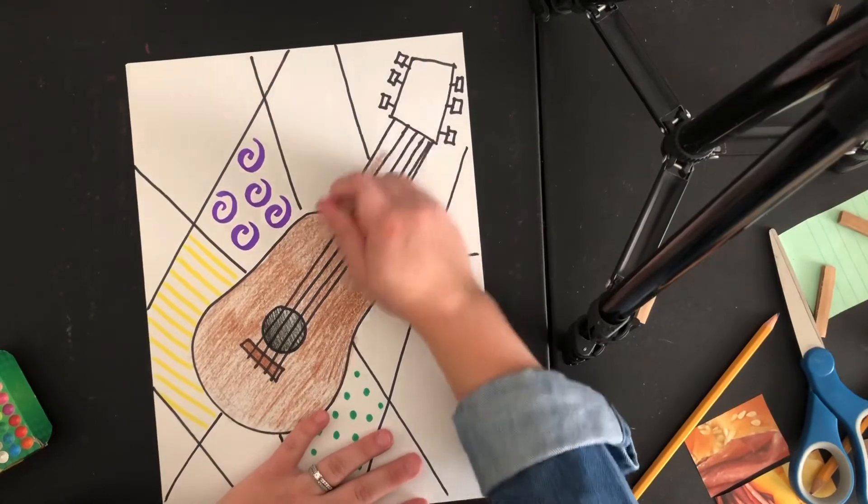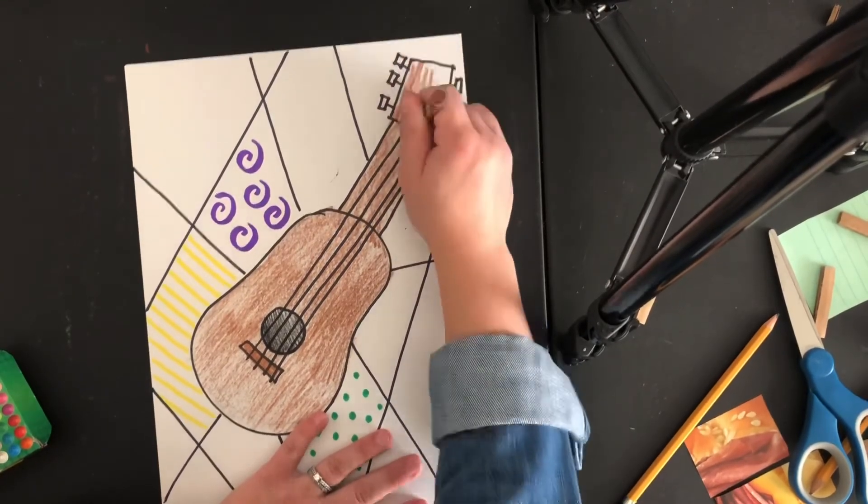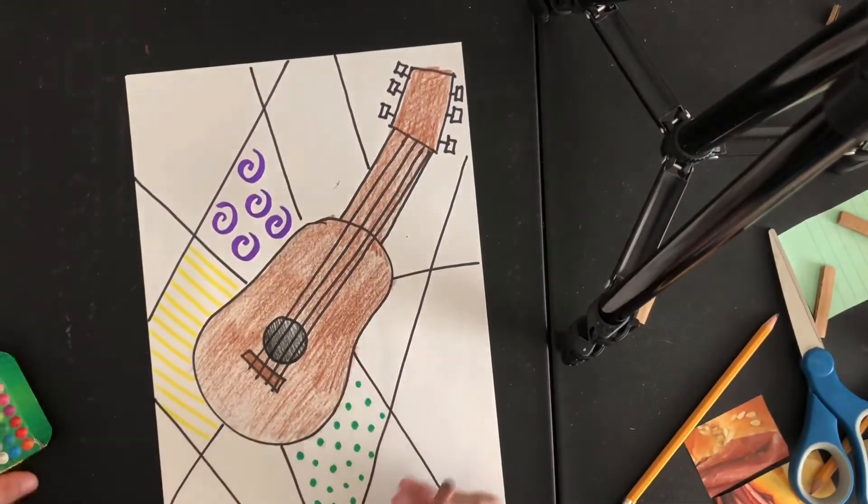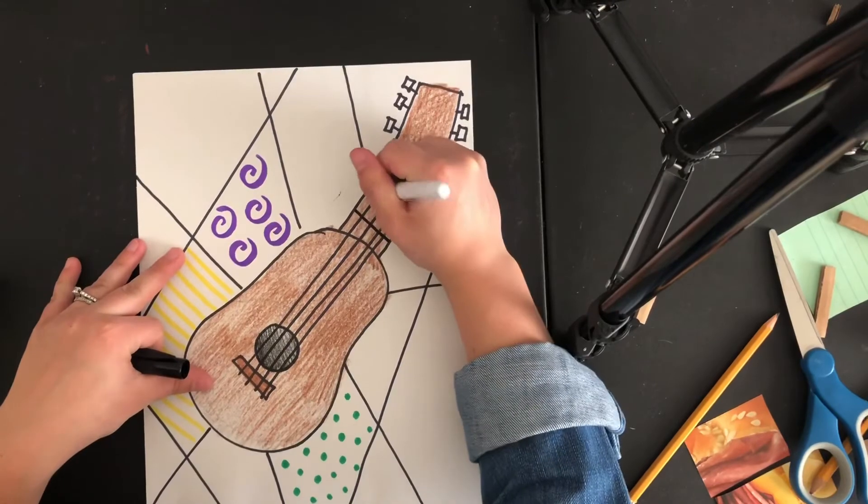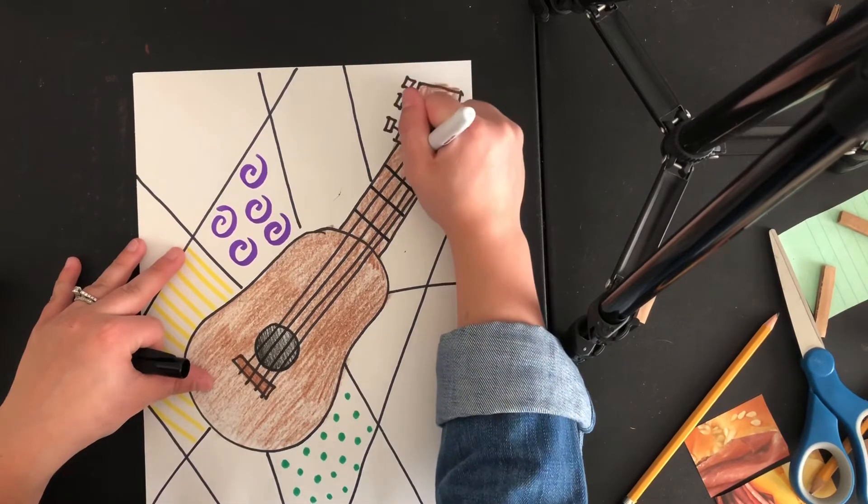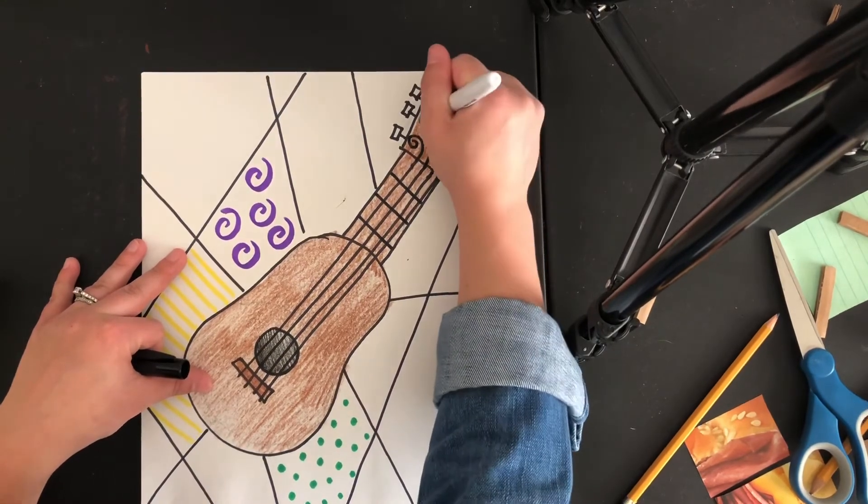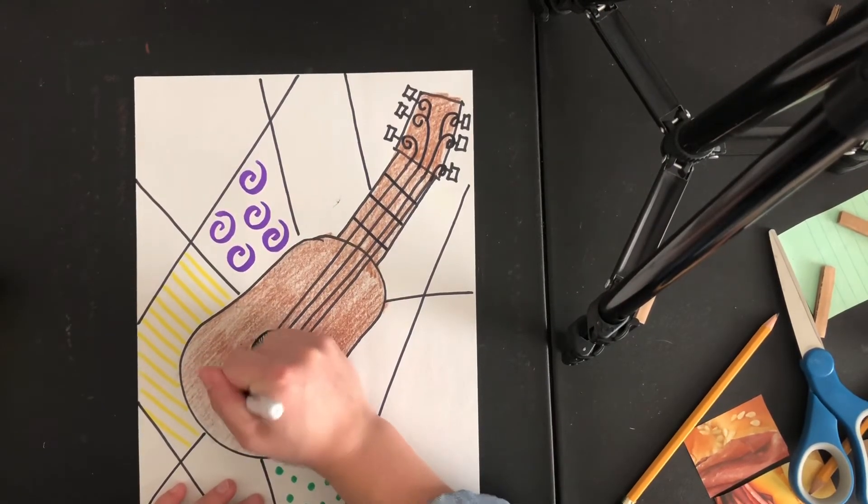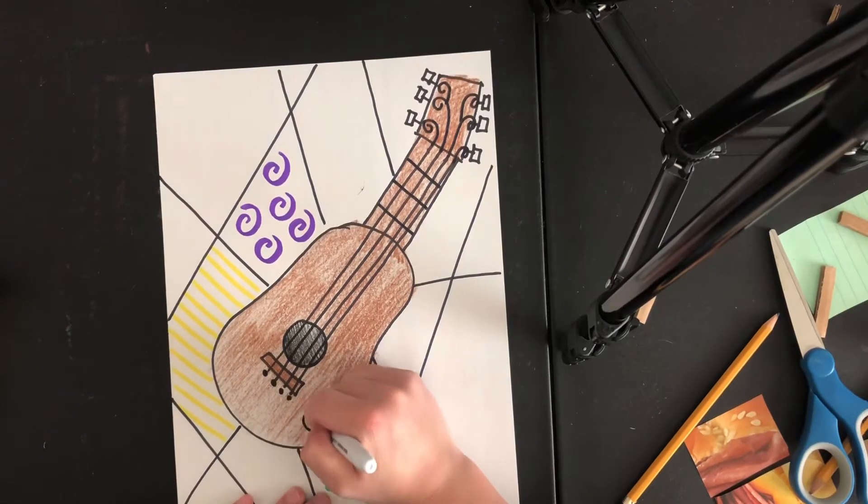And so I just want to show you how this can look. It's not the fanciest guitar and it doesn't have to be. So you can go in and add some of the frets to your guitar. You can continue to draw your strings up. Guitars do have six strings typically, but I did miss those in here. So I only have four and that's okay because again, it's abstract.